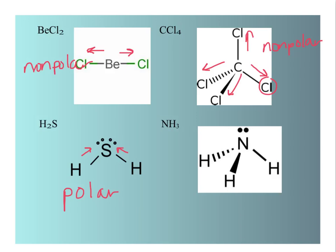And in ammonia, NH3, the nitrogen attracts the electrons more than the hydrogens do. And there is that lone pair up on top. So that whole end of the molecule is a little bit more negative. And the hydrogen end is more positive. So this one is a polar molecule as well.